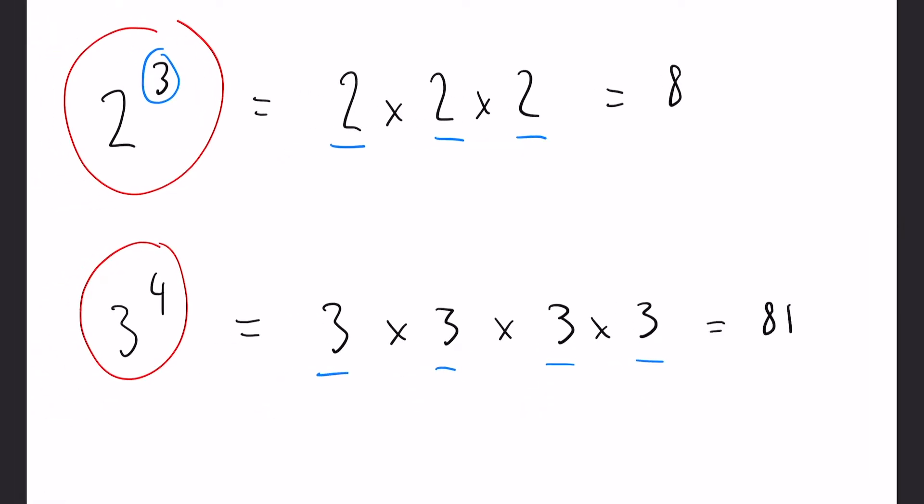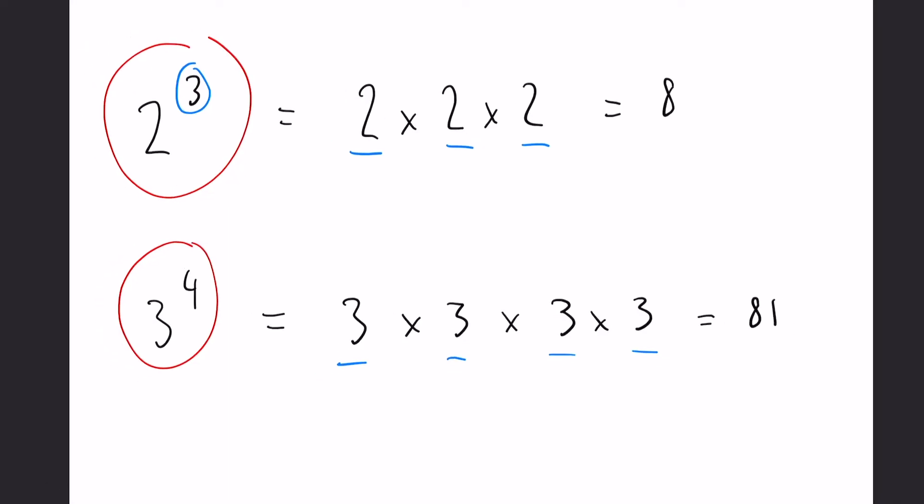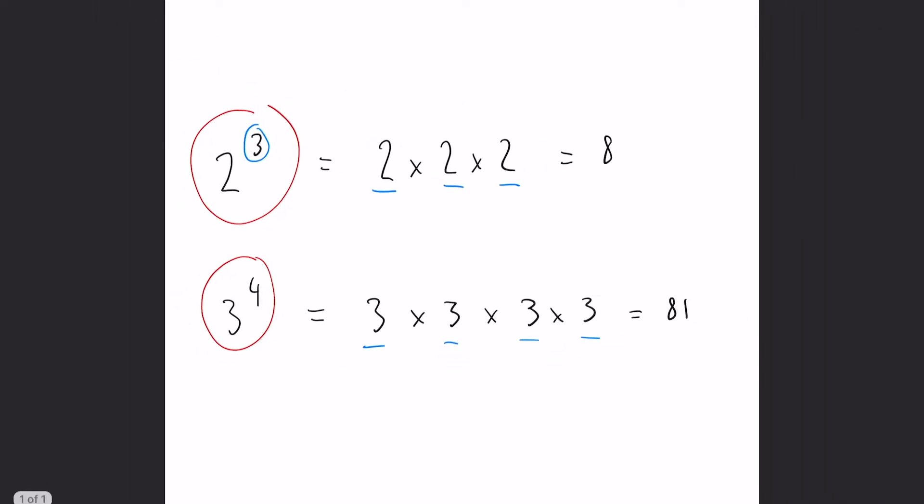So 3 times 3 is 9, times by 3 again we get 27, times that by 3, 81. That might seem quite complicated now but it's one of those things you just kind of remember it with practice, so don't worry too much if it's a bit confusing at the moment.